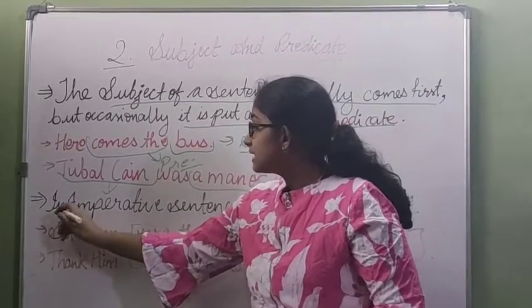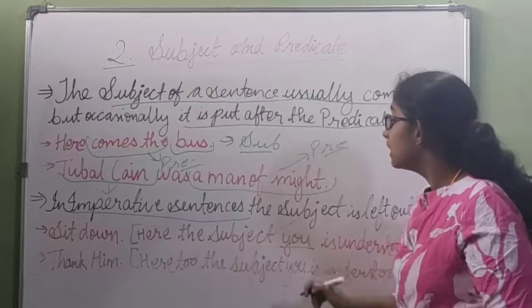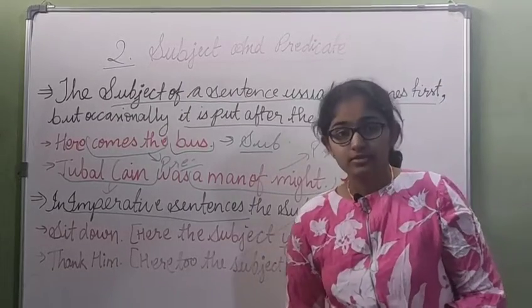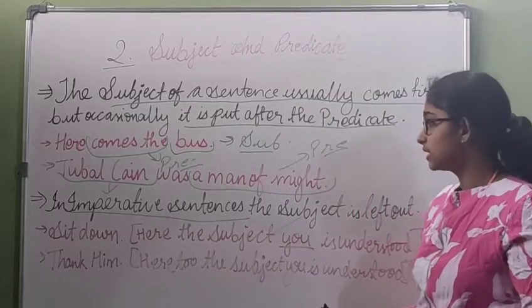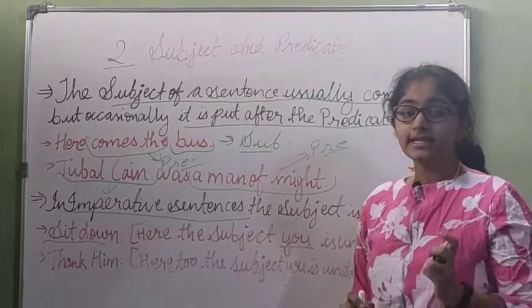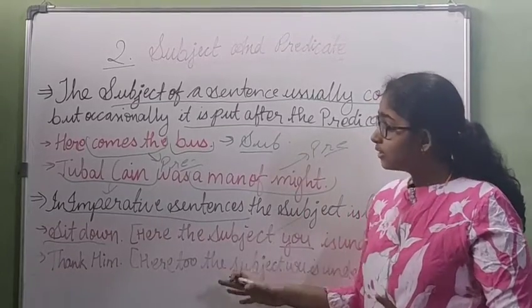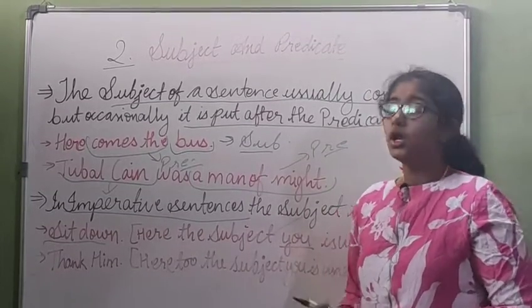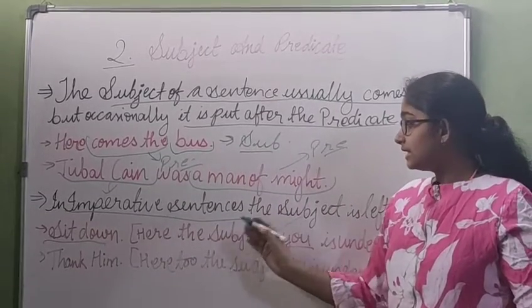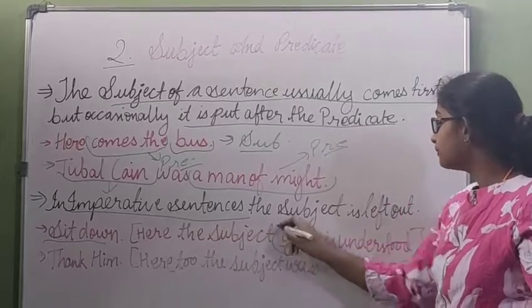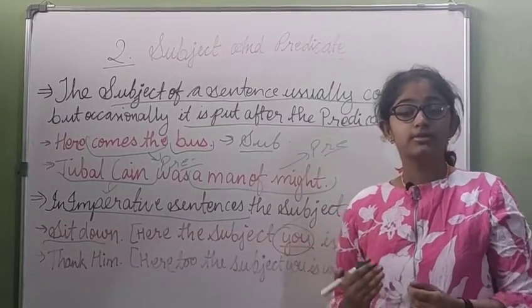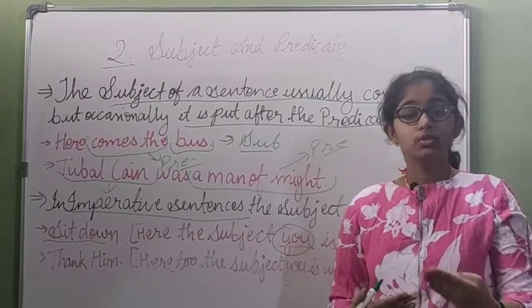The next type of sentences, in imperative sentences, the subject is left out. Some sentences which are imperative sentences should leave the subject. For example, sit down. When we consider a sentence, we know that here the subject you can be understood. We can understand that the subject is you.